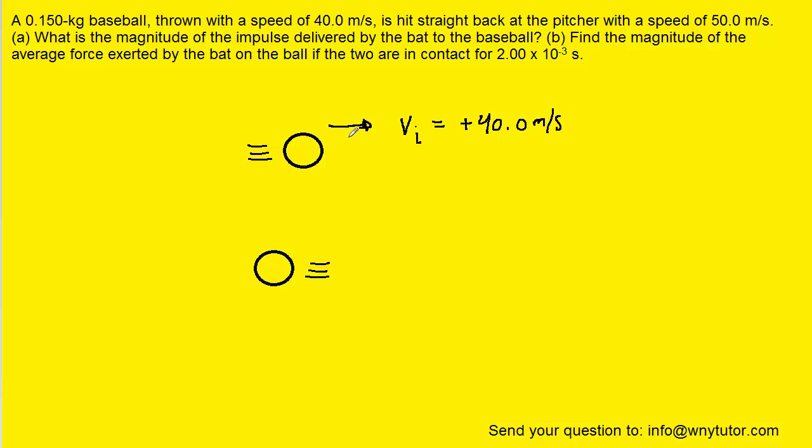We're assigning it a positive sign because the ball initially is moving to the right, but when it's hit back and moves in the opposite direction, we have to make sure that we note that its final velocity is actually negative and the magnitude of that velocity is the speed. It's 50 meters per second, so we'll fill that into the picture.